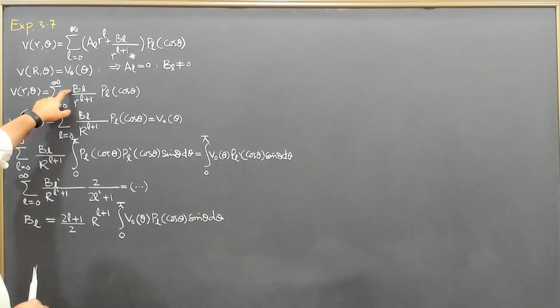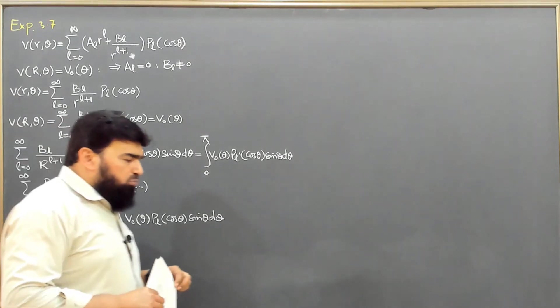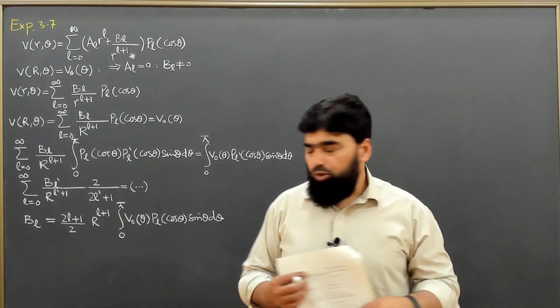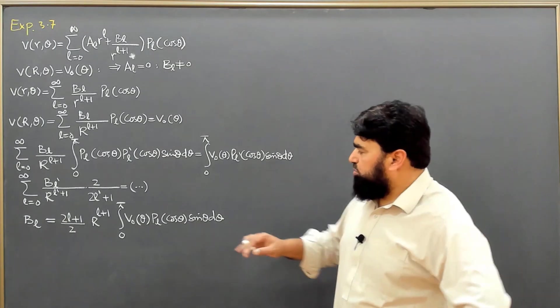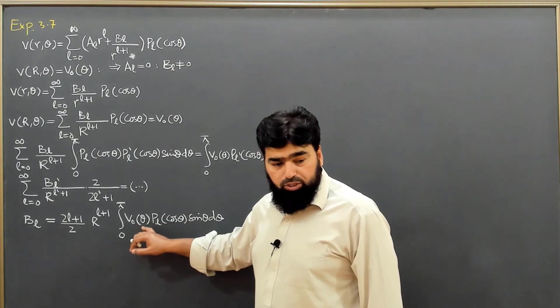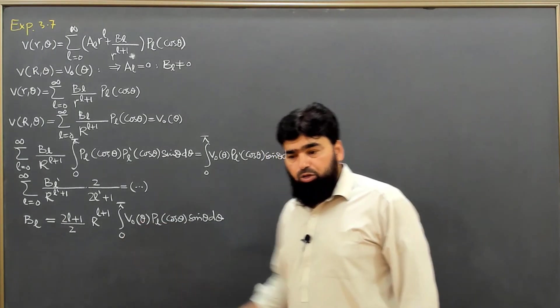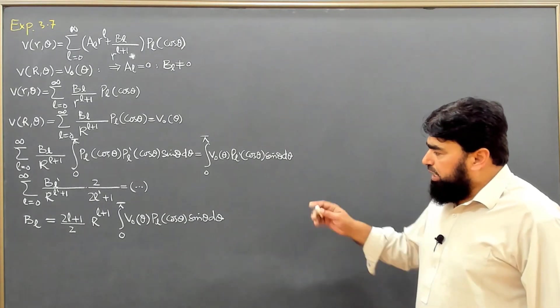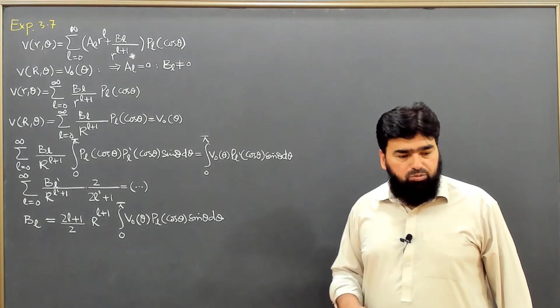When we put this BL here, we will have the solution for V(R,θ). Now we have to keep in mind one thing: we can go on with this example with V₀(θ) specified. If we take it from the previous example, we will have to do the rest of the steps.